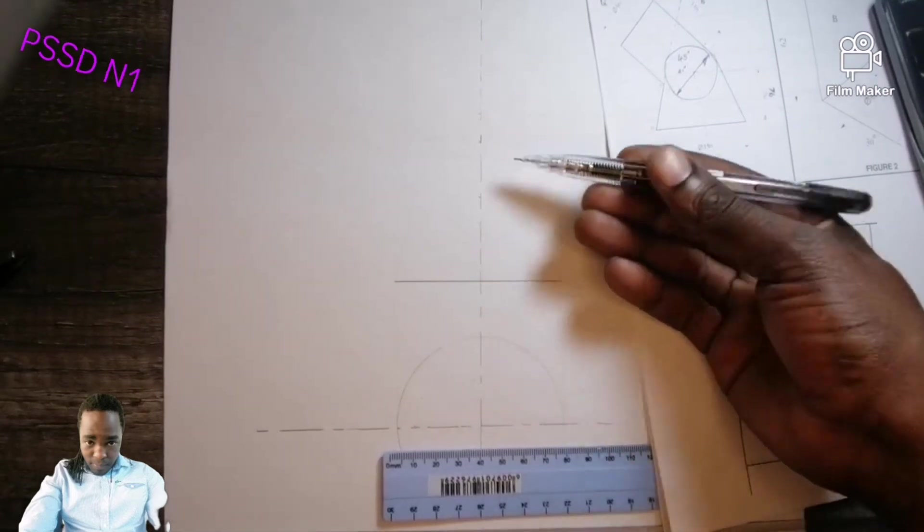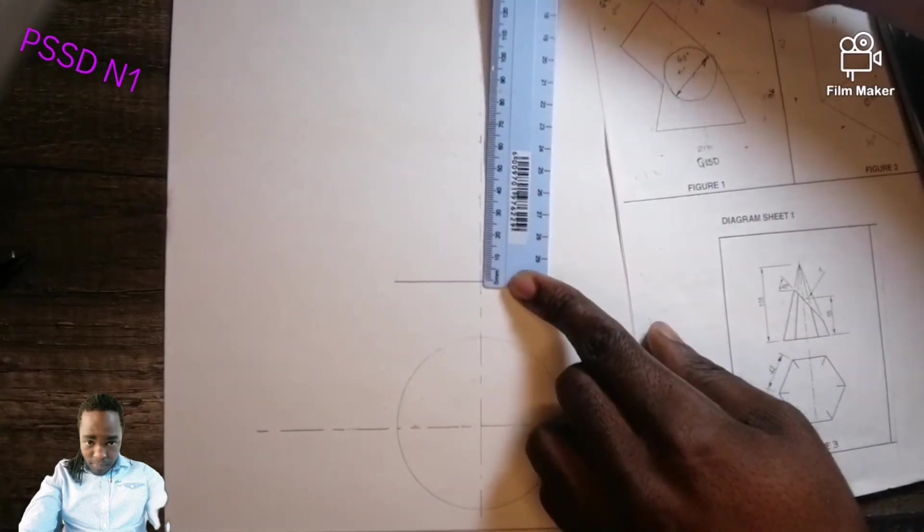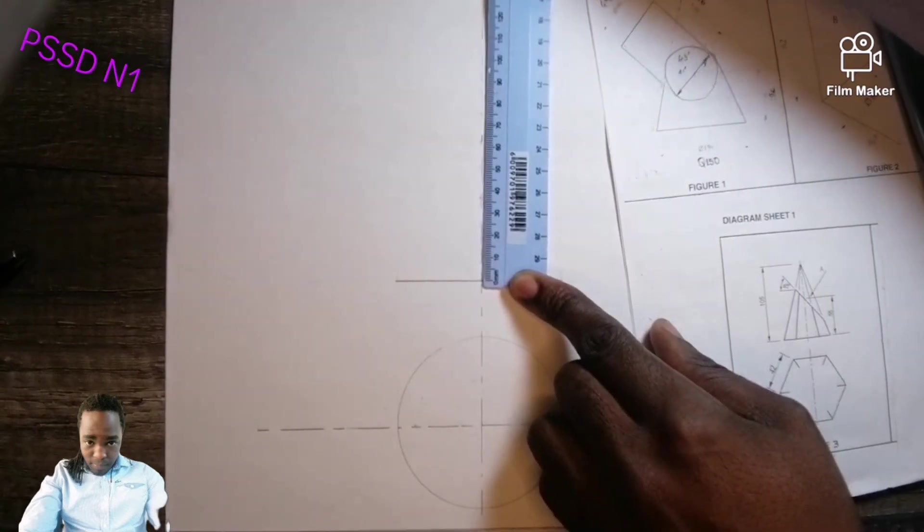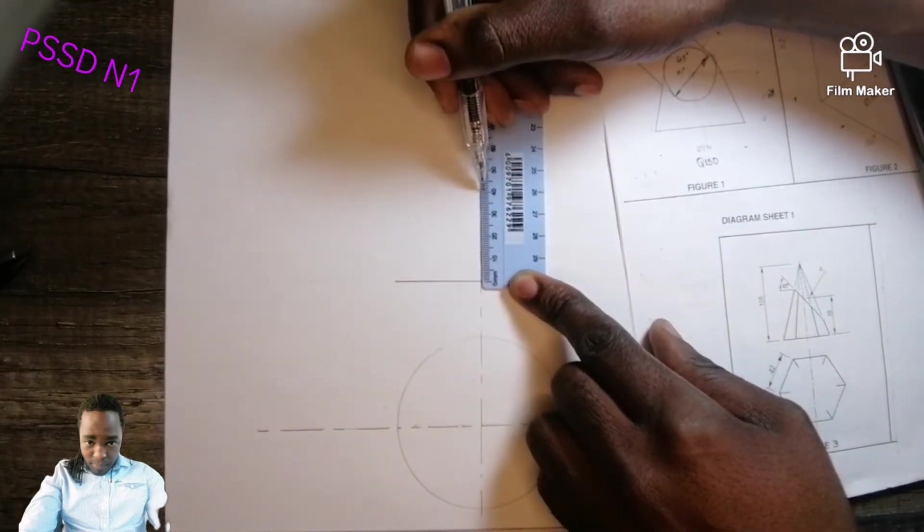30, 35, 36, 37, 38. 38 is there. So where 38 is you put your horizontal faint line like this.